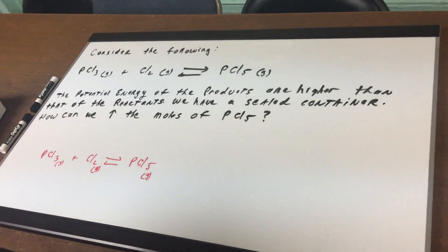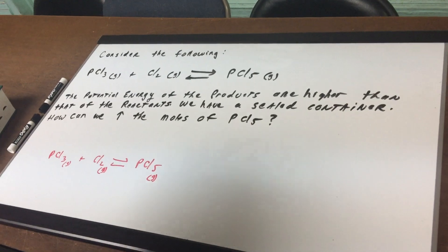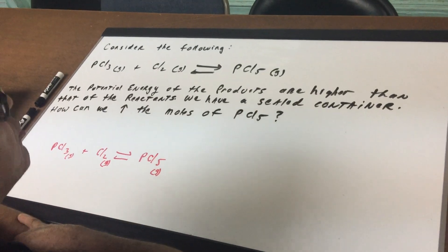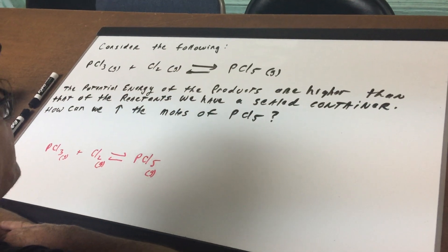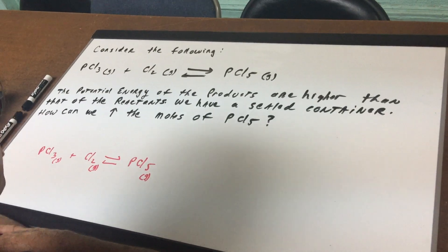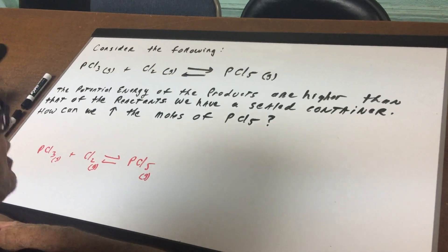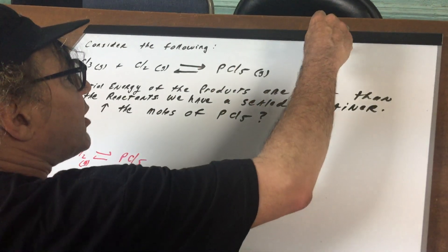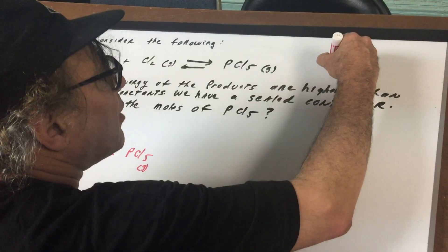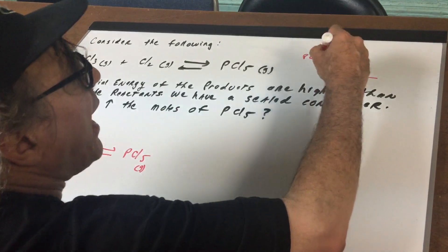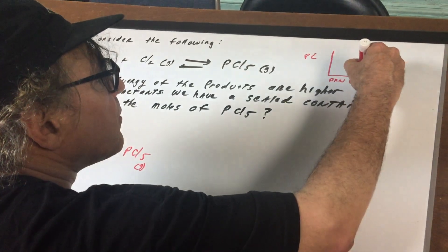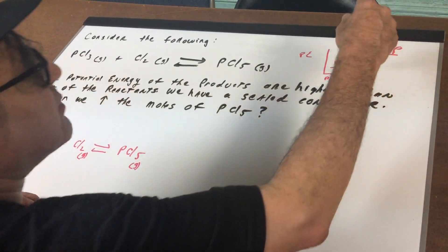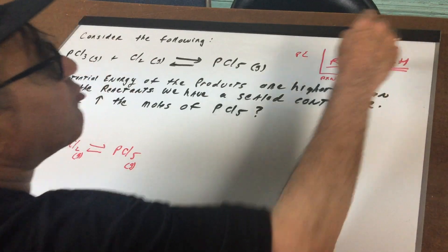What I have here is an equilibrium system where we are going to take phosphorus trichloride reacting with chlorine and we're going to get phosphorus pentachloride. Now this is an addition reaction and as you can see it's in equilibrium and it says here that the potential energy of the products are higher than that of the reactants. We have a sealed container and what I want to do is how can we increase the moles of PCl5? Now the first thing we're going to do is what does it mean when it says the products are at a higher level potential energy-wise? Well if you remember we have potential energy on the y-axis and this is the reaction progress and the graph would look like this where these are the reactants and these are the products. Notice the product is higher. So that just tells me that this reaction is endothermic.